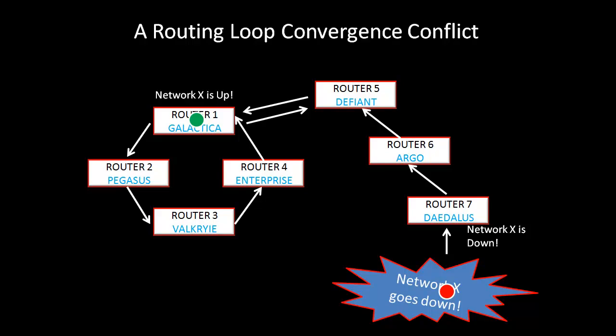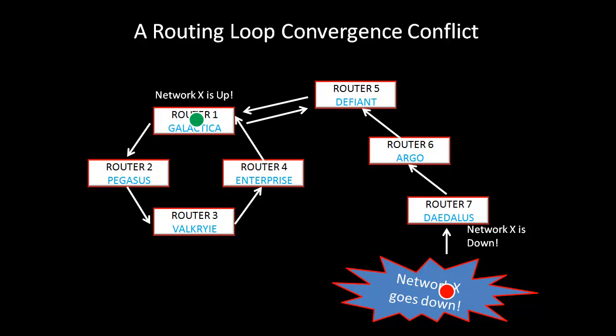The following diagram is a representation of a routing loop convergence conflict. In this case, network X goes down right next to Router 7. Router 7 learns of network X's condition and begins to send out an update packet to the other routers to let them know. However, the problem is Router 1 is also sending out an update packet broadcasting that network X is up. The routers can never converge because as each router learns that network X is down, the other routers are learning once again that network X is up. This creates the loop.